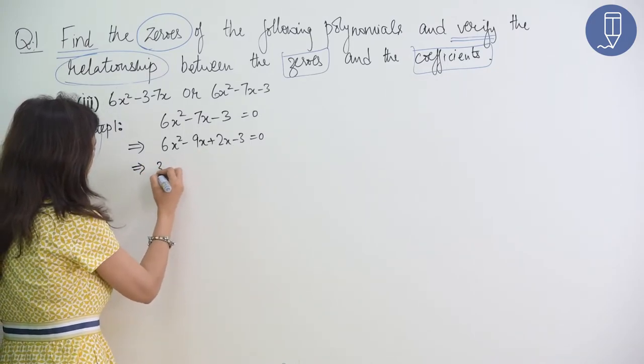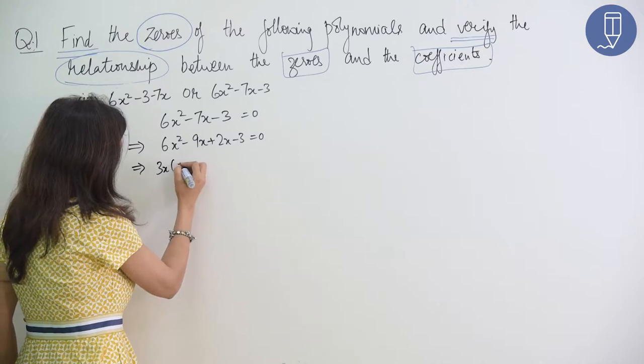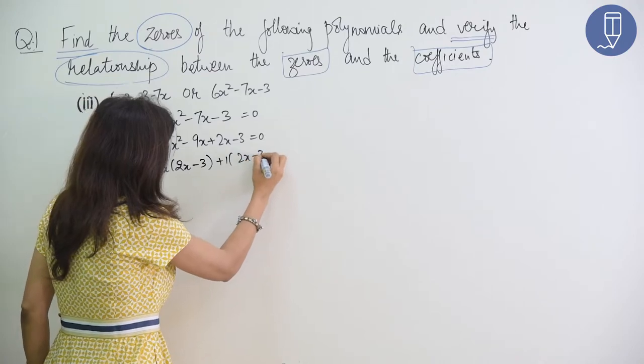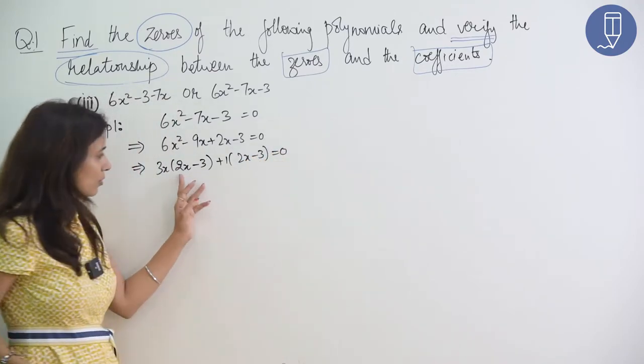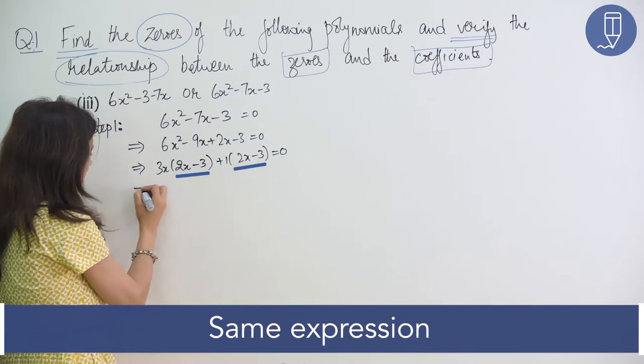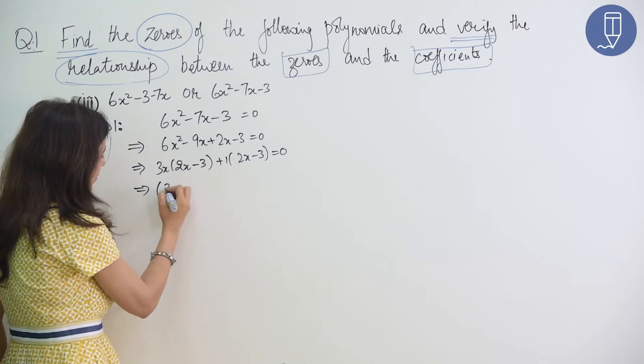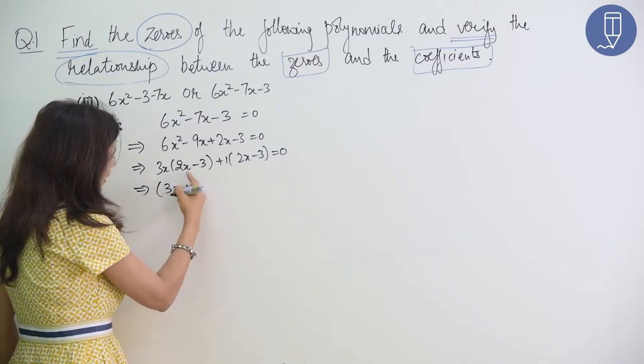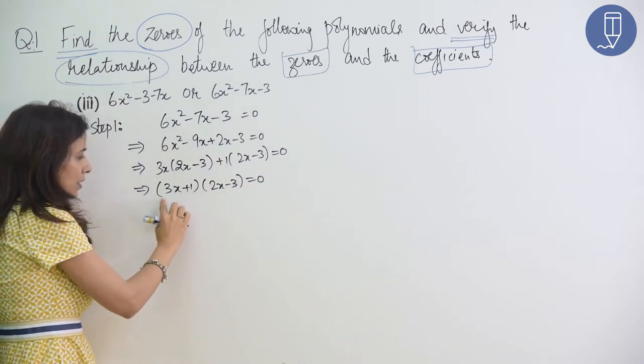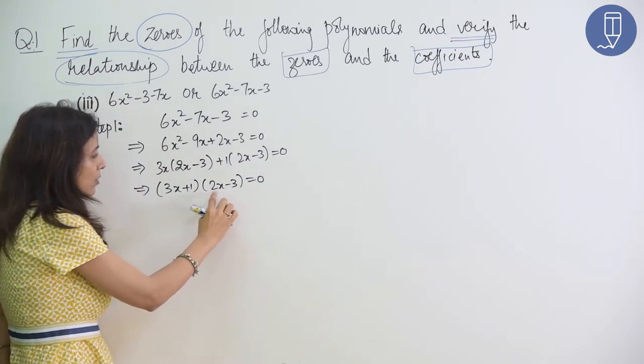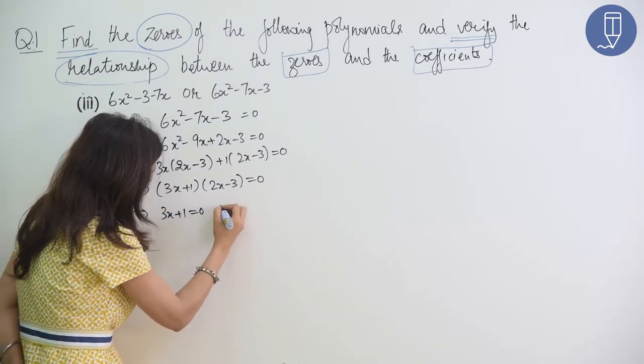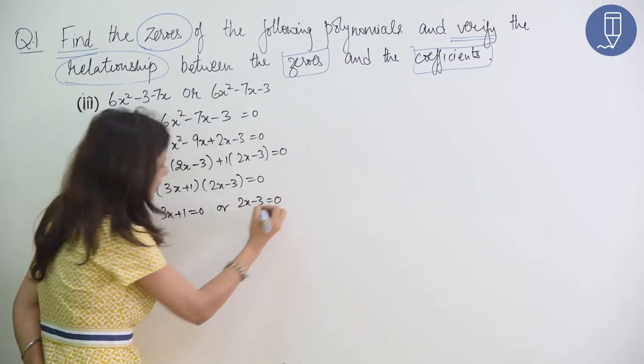Now, we will take common. 3x common layer. We have 2x minus 3 plus 2x minus 3 equal to 0. Notice, this expression and this expression are the same. Okay? So, this gives us 3x plus 1 and 2x minus 3. Now, next step, this will be 0 or this will be 0.